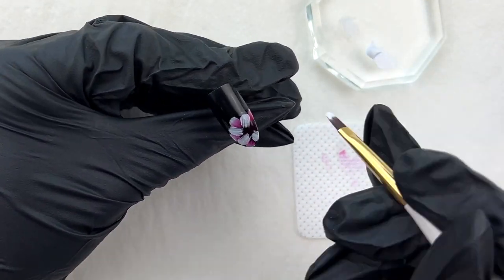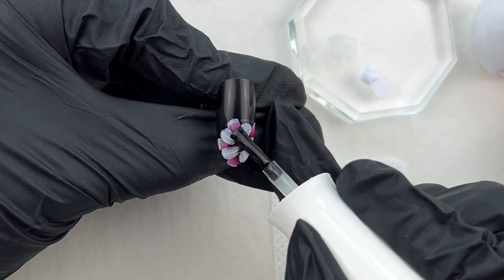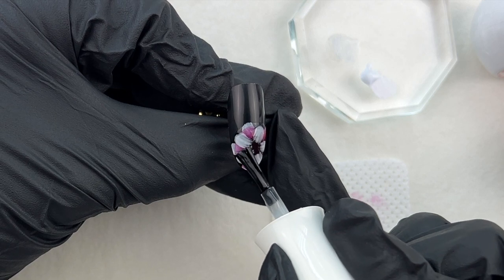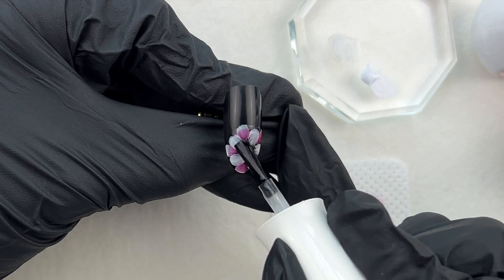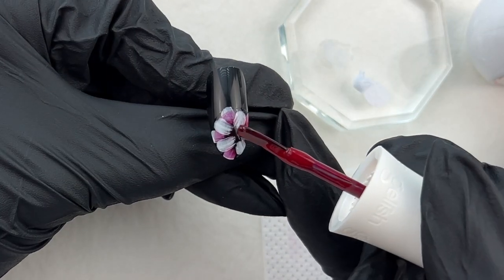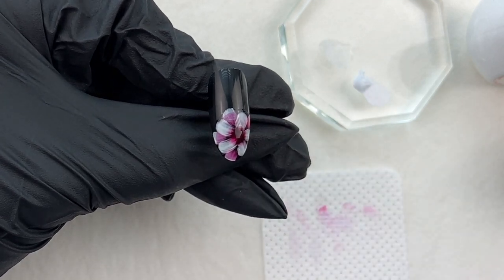After the second layer of the petals, cure it for 30 seconds. Repeat the blooming gel process. This time the petals are smaller, so be careful with the amount of gel. All you need is a nice thin layer of the blooming gel and a small amount of the red gel polish.